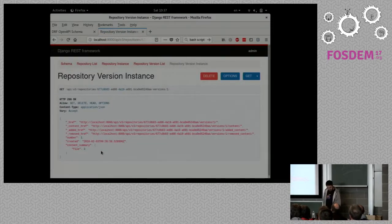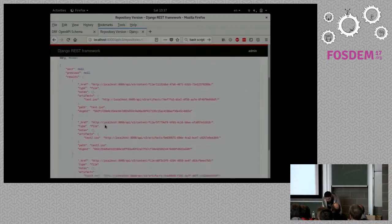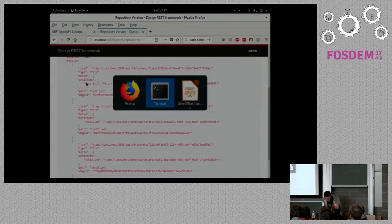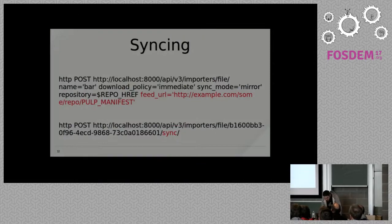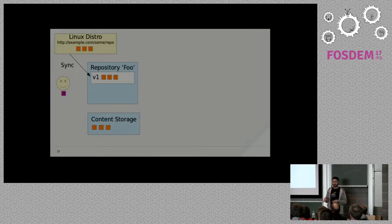The repository version has three files in it and we can look at the actual content: test1.iso, test2.iso, and test3.iso. So now we have a repository version for repository 'foo', and we also have those three files stored in Pulp so they can be reused for other repositories.